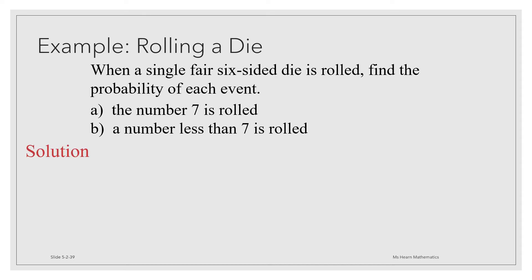Keeping this in mind, consider this example. When a single fair six-sided die is rolled, find the probability of each event. A, the number 7 is rolled. Well, you and I both know that it's impossible to roll a number 7 on a six-sided die, but let's go back to the theoretical probability definition.